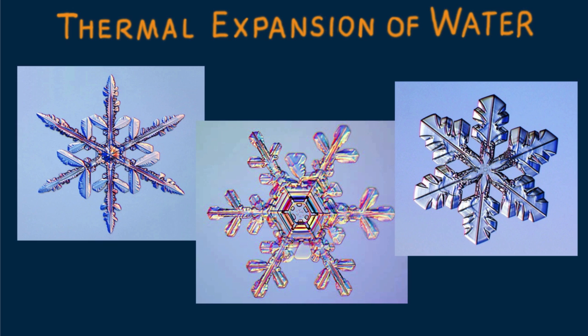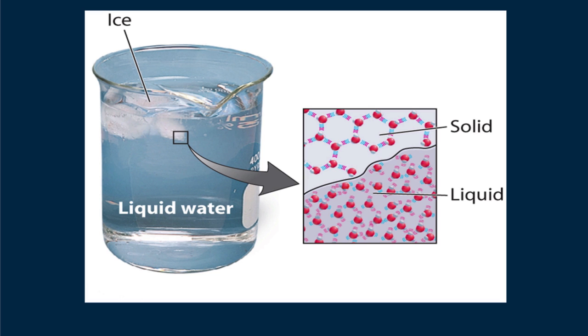The six sides stem from the bonding angle of hydrogen atoms with oxygen. Within the hexagonal structure of ice crystals are open pockets that make ice less dense than water, which is why ice floats in water.